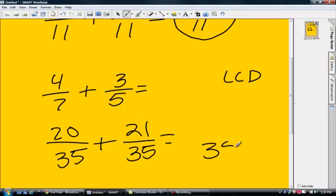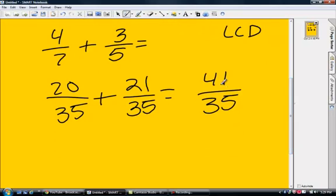Now we have like denominators, so we can add straight across. 20 plus 21 is 41. Now I think this is an acceptable answer, but you could also have 1 and 6 over 35.